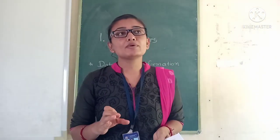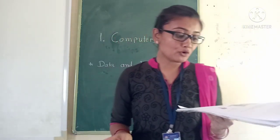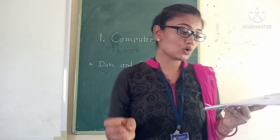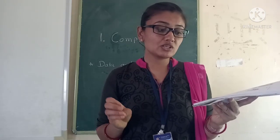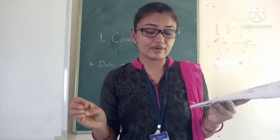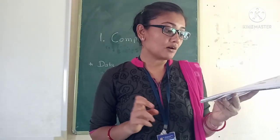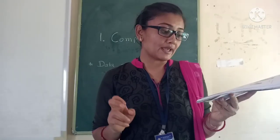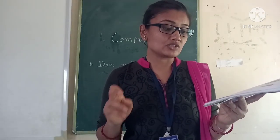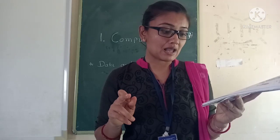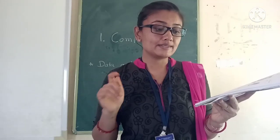A program can work on data to give us information in different ways. For example, it can arrange the names in order of increasing age: Salman, Balak, Raju, and Seema.